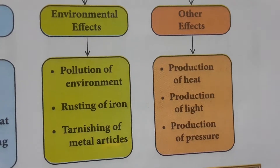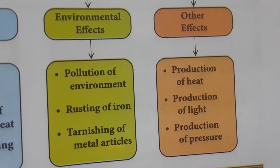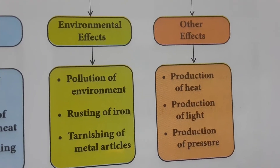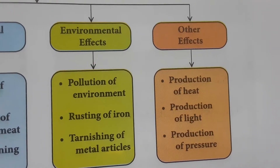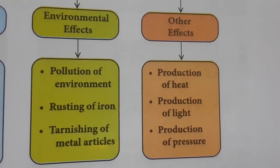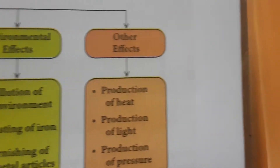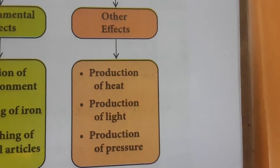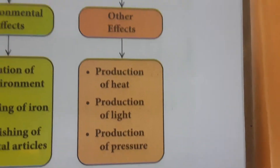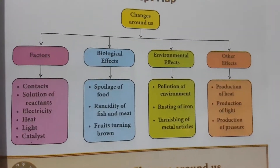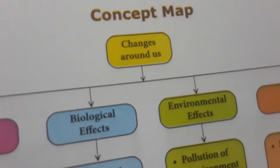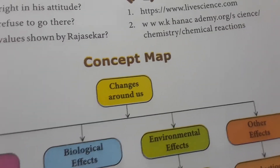Environmental effects include pollution of the environment — unwanted materials continuously added to the environment are pollutants. Rusting of iron and tarnishing of material articles are examples. Other effects include production of heat, production of light, and production of pressure. These are the sub-headings covered under the heading 'Changes Around Us.'